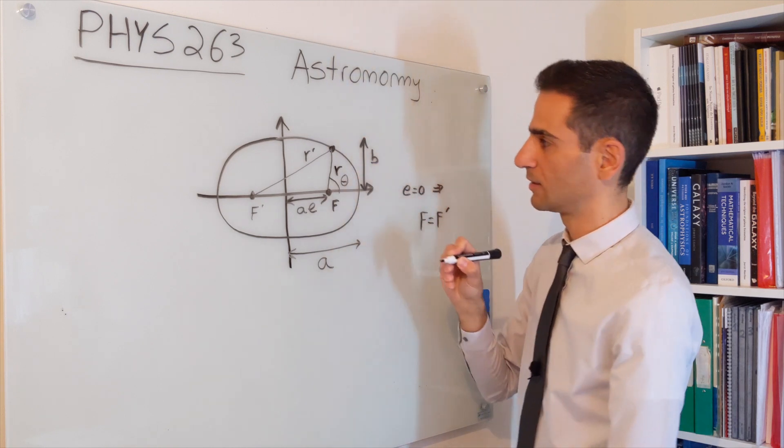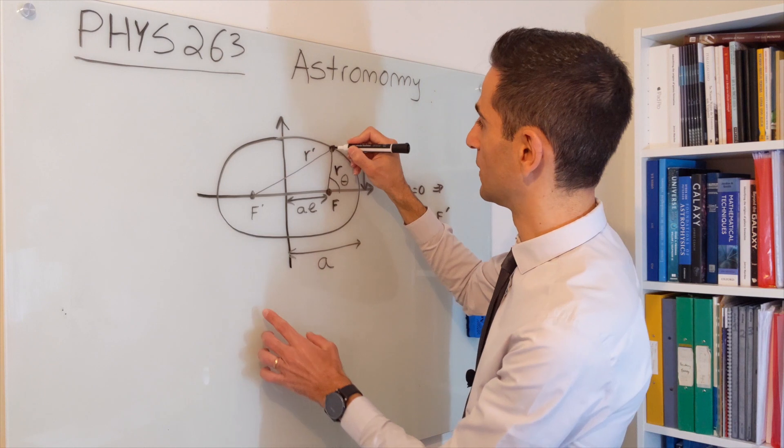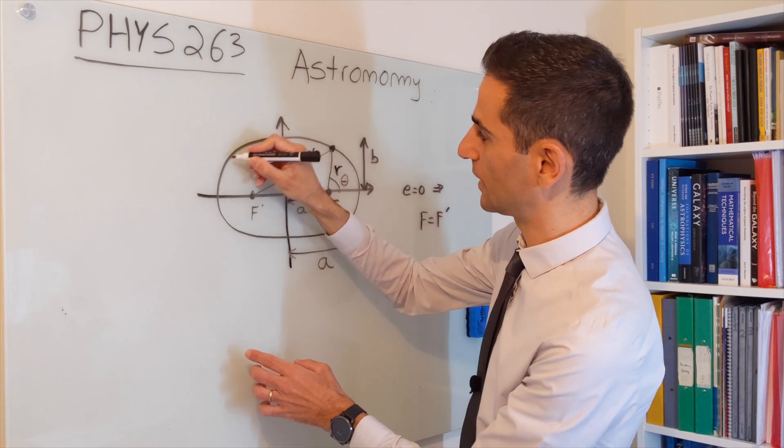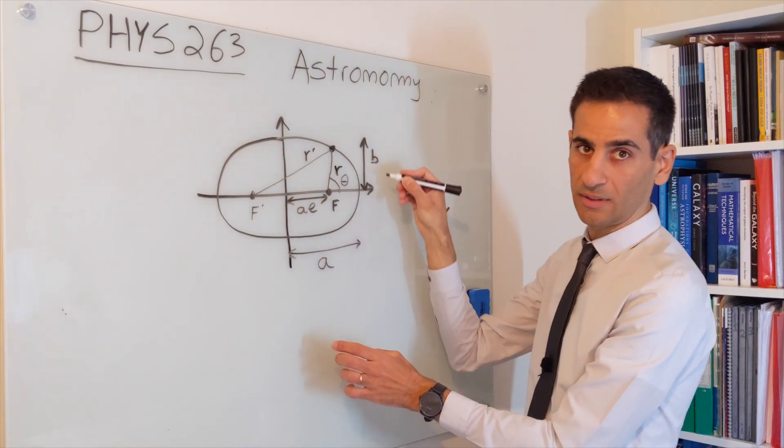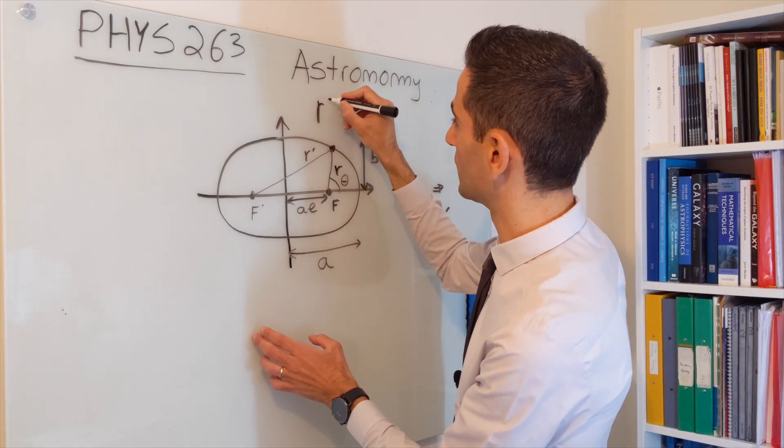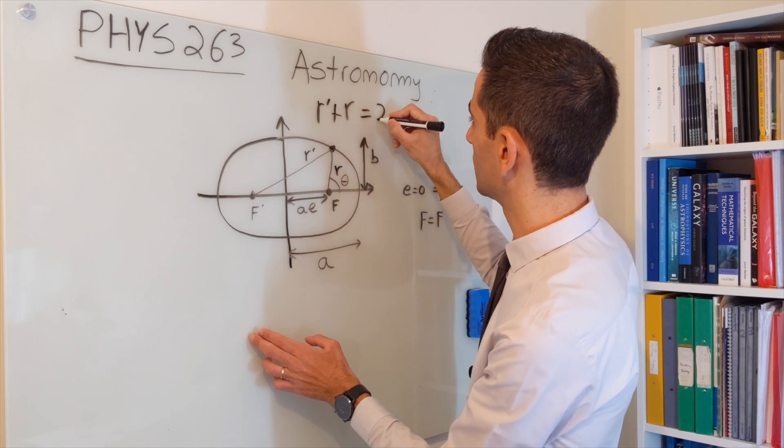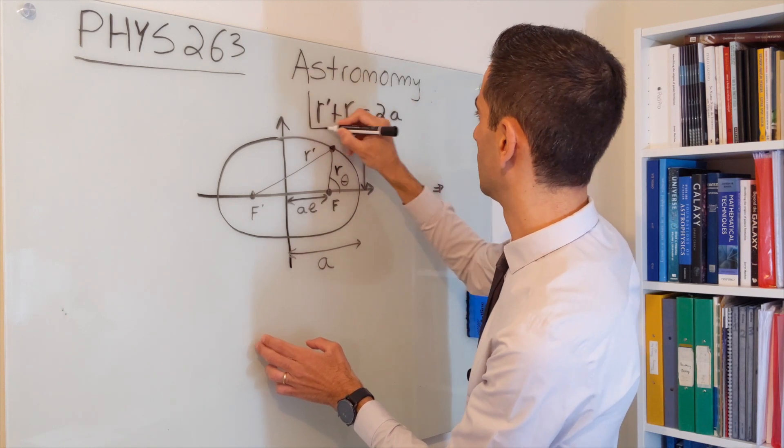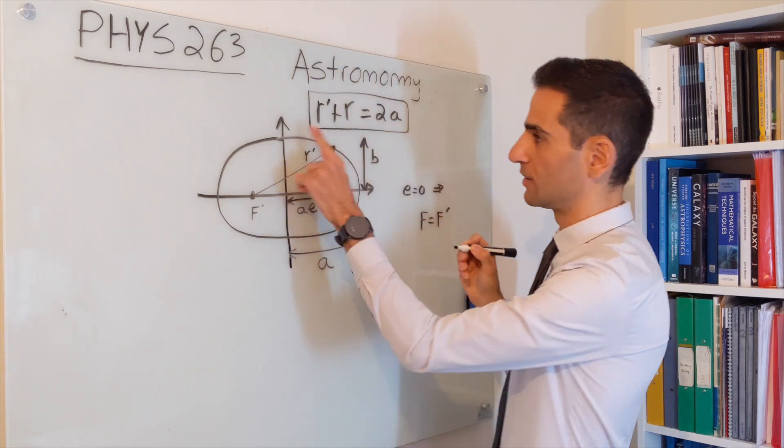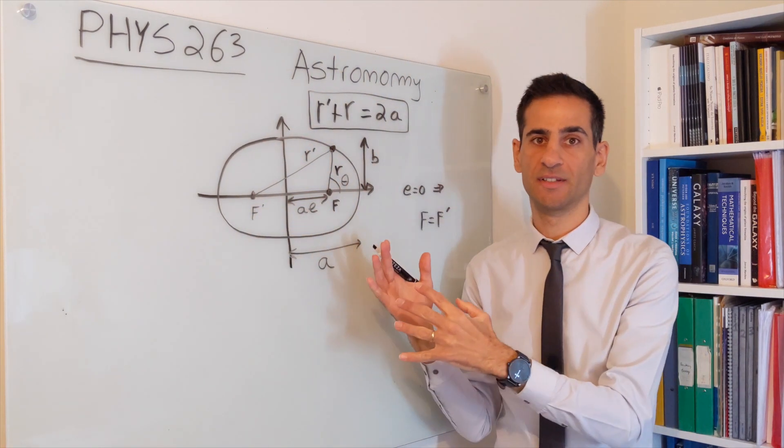We'll see that the angle that we're going to be talking about is theta. The definition that we saw is that you can actually define all these points of a specific ellipse if you look at points that satisfy this condition: r prime plus r equals 2a.